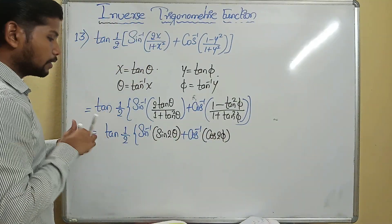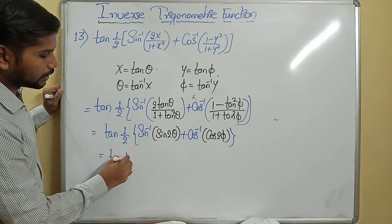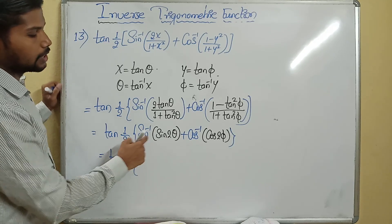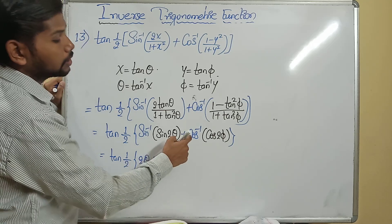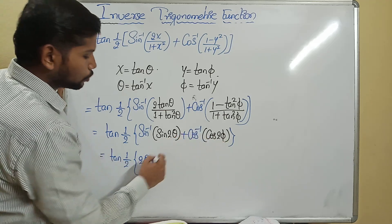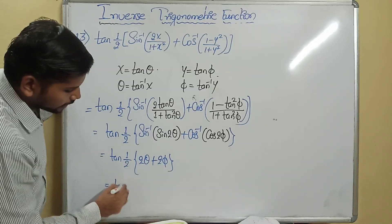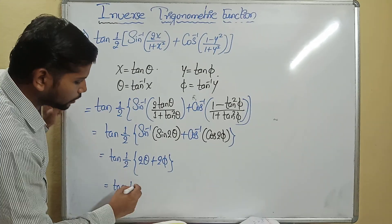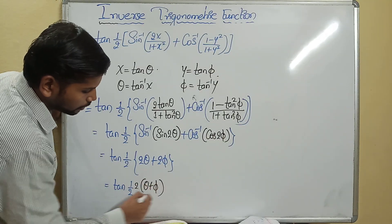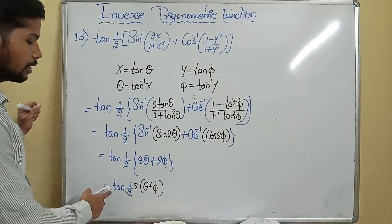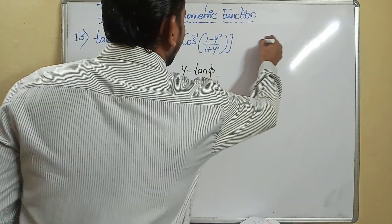The next step: tan of (1/2)(sin of 2θ becomes 2θ, plus cos inverse of cos 2π becomes 2π). Taking out 2 as a common factor from the bracket, we get tan of (θ + π). The 2s cancel.